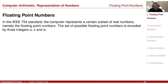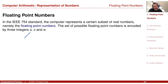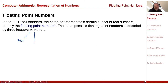Floating-point numbers are represented or encoded by three integers: S, C, and E. S is actually just one bit — zero or one — and it represents the sign. The integer C somewhat represents the value.